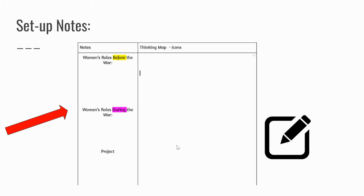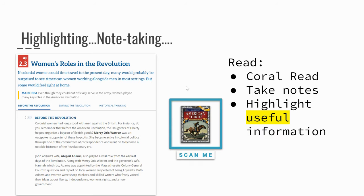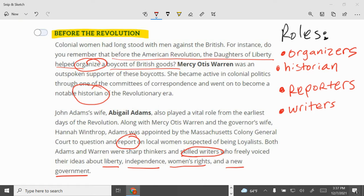We talked about a few roles before the war and a few roles during the war. I read the section — this is Chapter 6, 2.3, Women's Roles in the Revolution. If you don't see it in Schoology, you'll just have to go to Nat Geo and open it up there. As you can see from these notes, before the revolution, all we really wanted to capture were the roles.